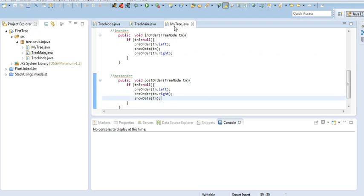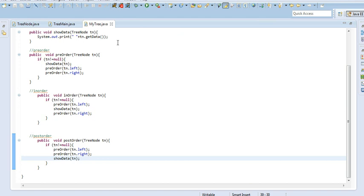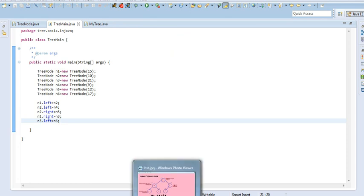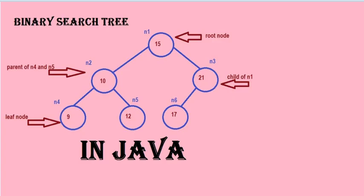I have commented these things. And in our main class, I have provided 6 nodes. I have shown a pictorial view of these also. That is, n1 is 15 — n1 with data 15 is our root node. n2 as 10 is our second node. And 21 is n3, that is the third node. Similarly, n4, n5, n6.